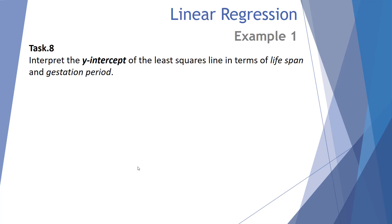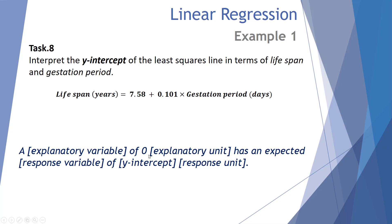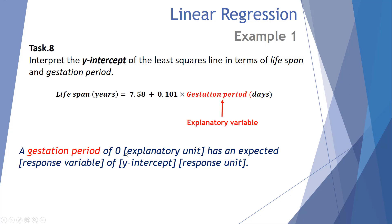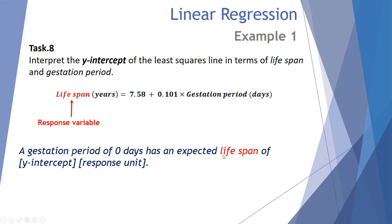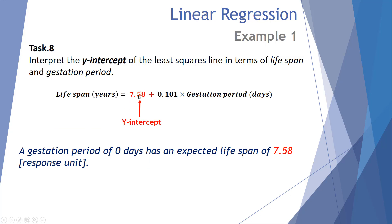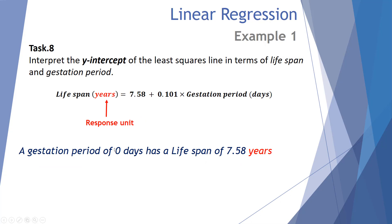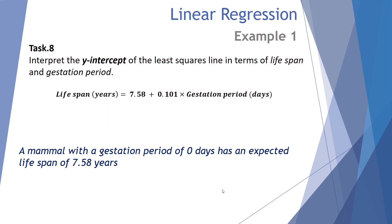Task number eight: interpret the y-intercept of the least squared line in terms of lifespan and gestation period. Using the same recipe approach: a gestation period of 0 days has an expected lifespan of 7.58 years. More specifically, a mammal with a gestation period of 0 days has an expected lifespan of 7.58 years. This is a nonsensical interpretation, as a mammal with a gestation period of 0 days is very unlikely to give birth to a mammal with a life expectancy of 7.58 years.